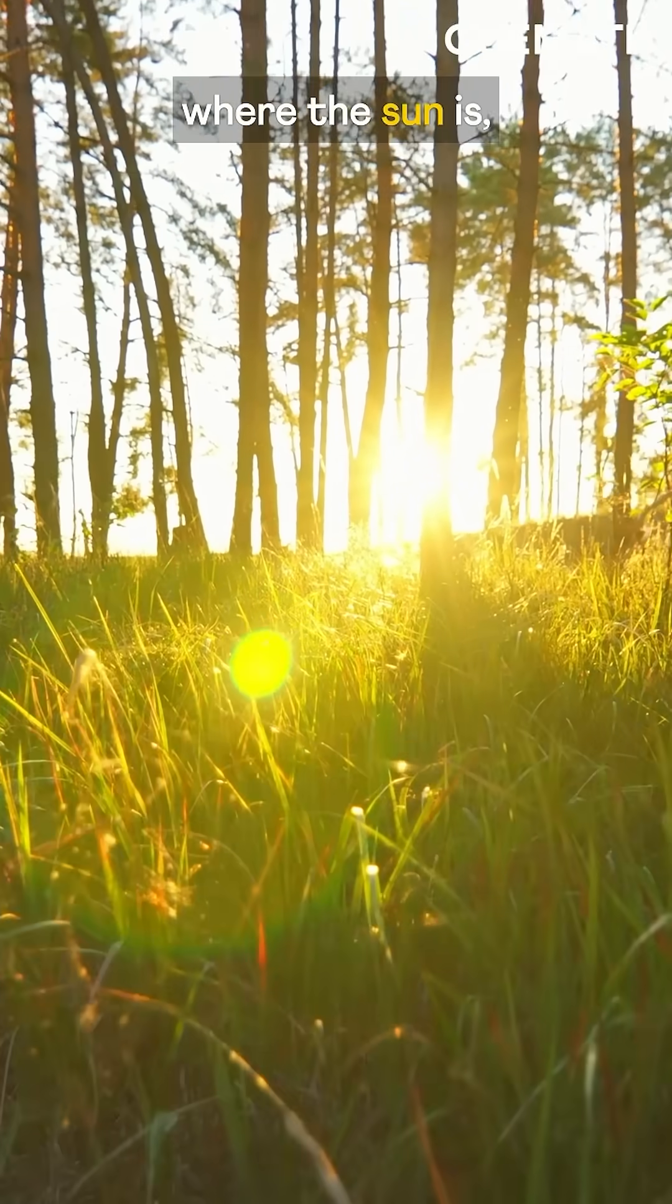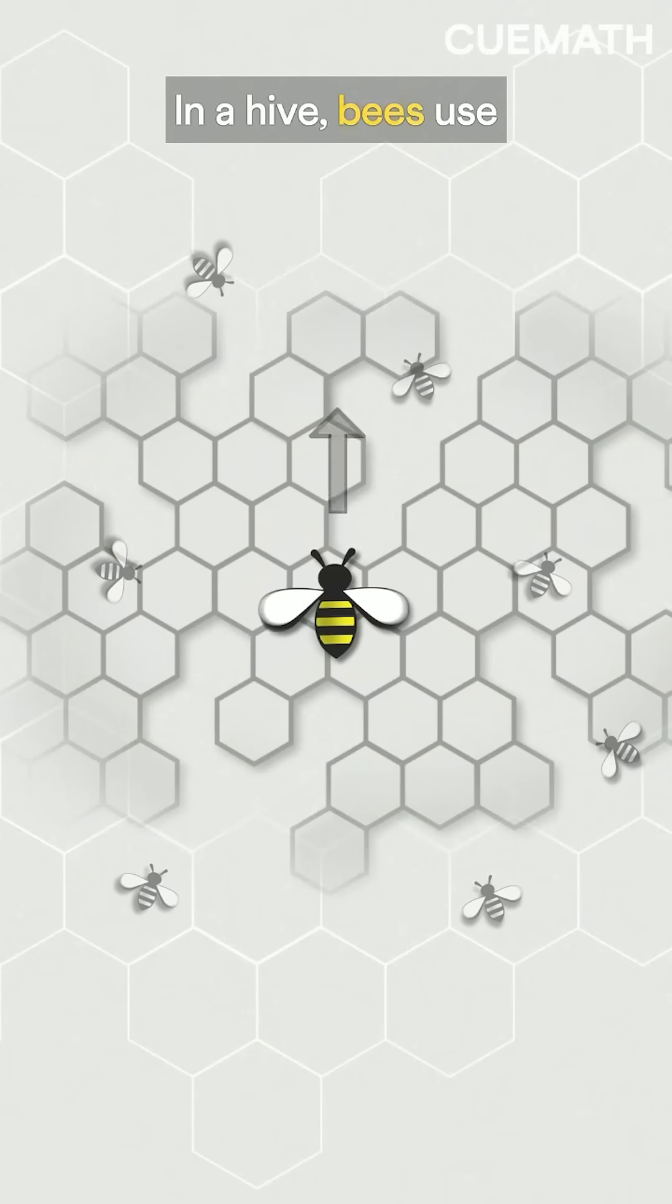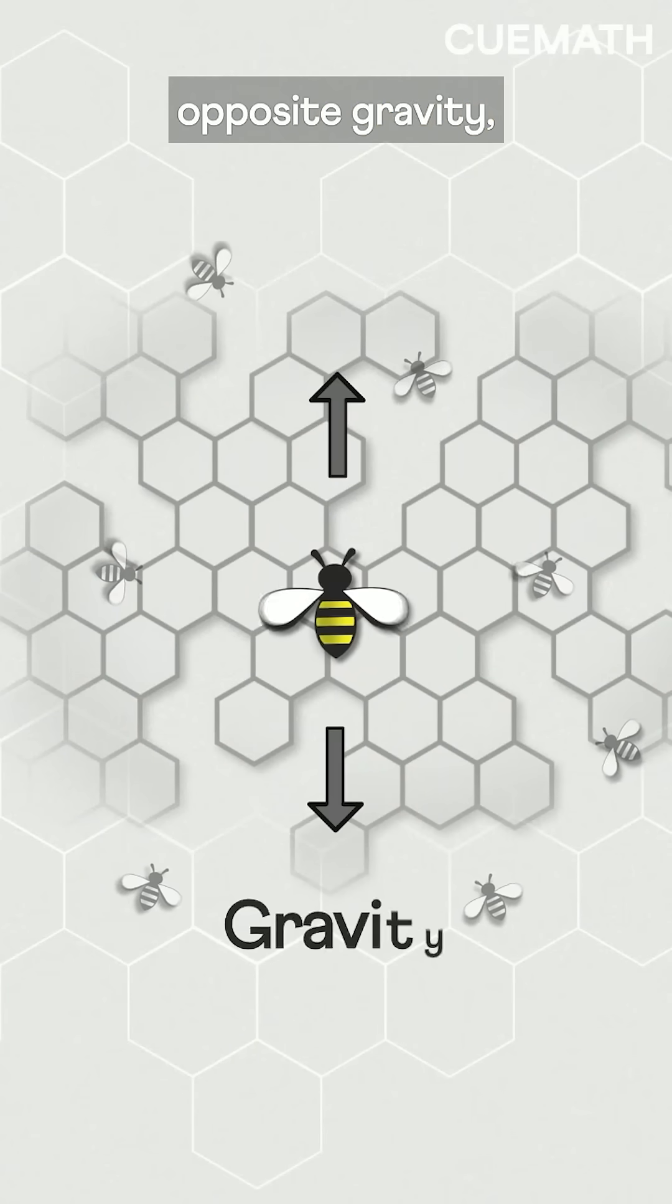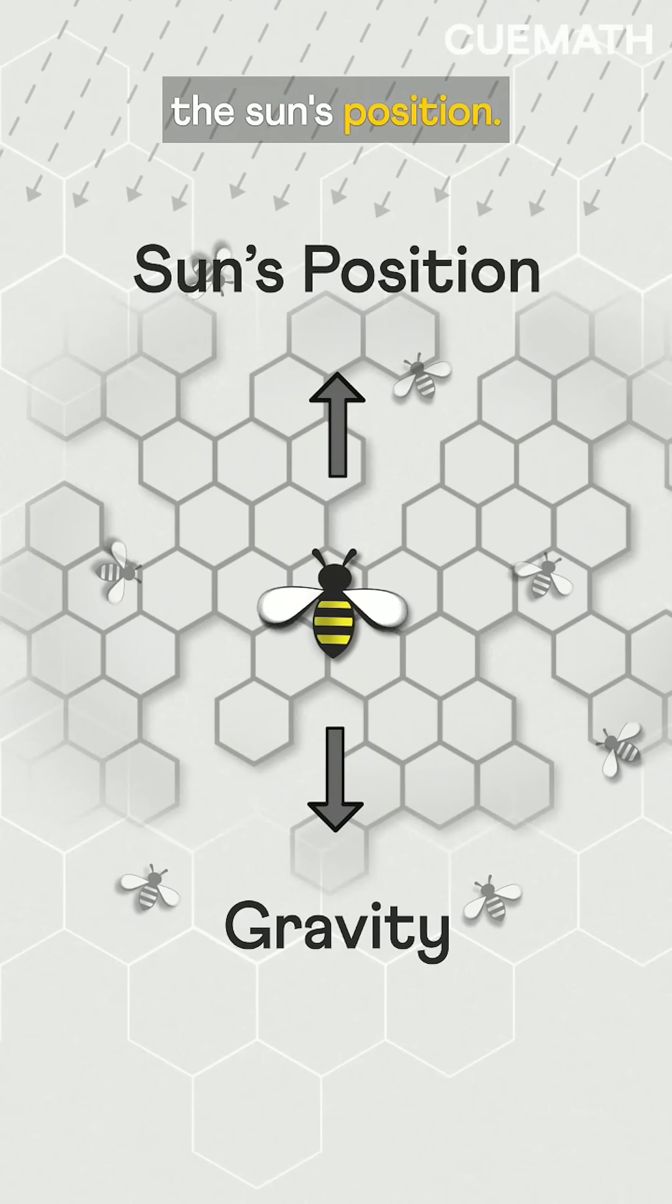Now bees always know where the sun is thanks to their special eyes and an internal clock. In a hive, bees use the up direction to represent the sun's position at any time.